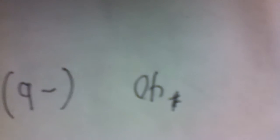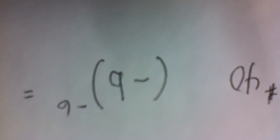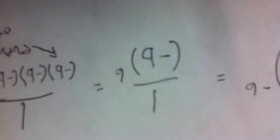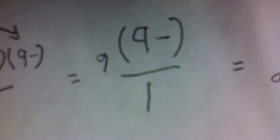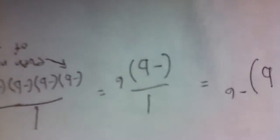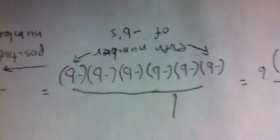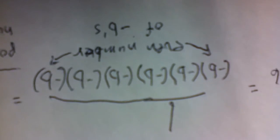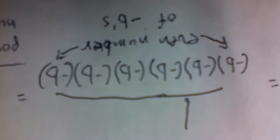Number 40. The quantity negative b all to the negative 6th power is 1 over the quantity negative b to the 6th power, which is 1 over negative b multiplied times itself 6 times.